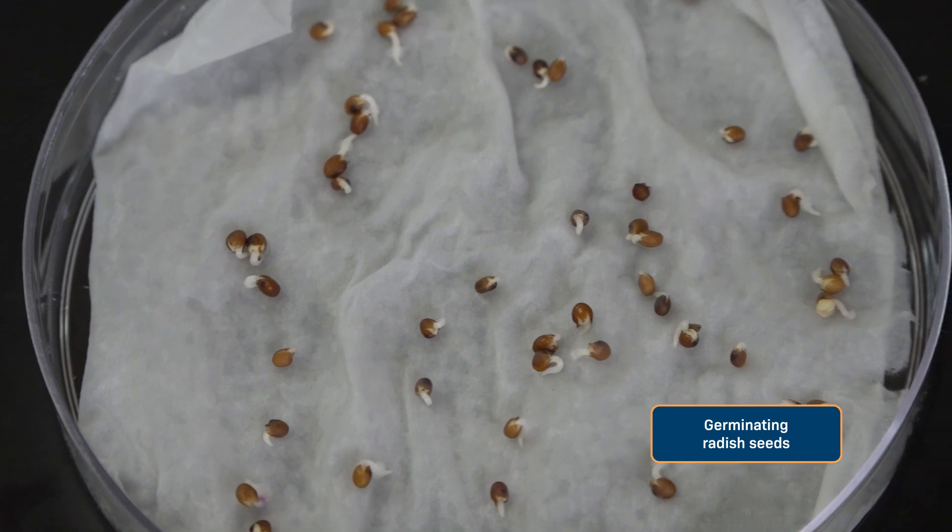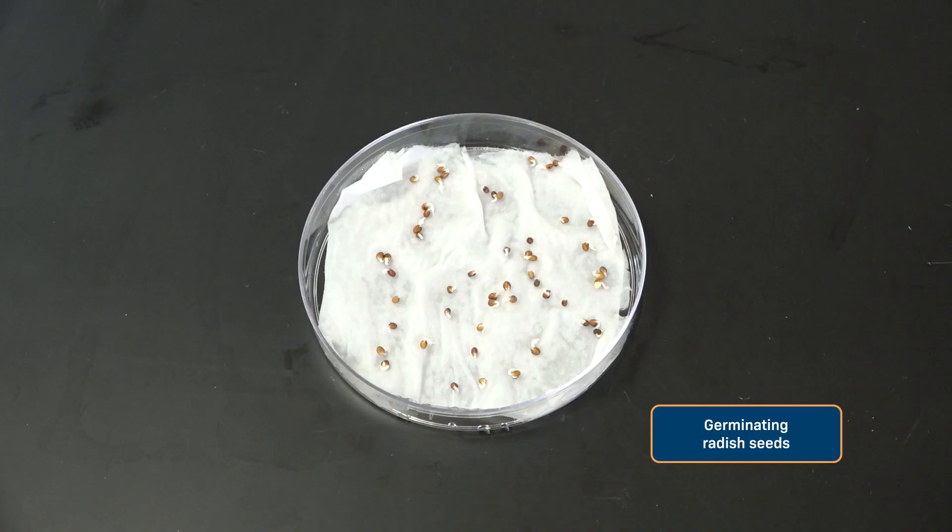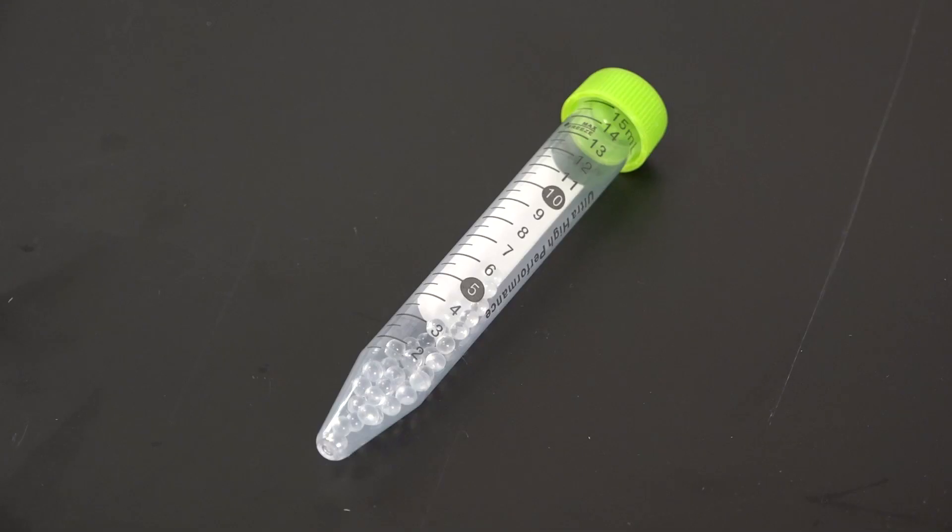In this case, germinating radish seeds. Germinating means I've soaked them in water for about 24 hours, so they're just starting to sprout. You could also use little critters like worms, ants, or flies, or play around with different types of seeds and plants. Finally, you'll need glass beads for the control respirometer.